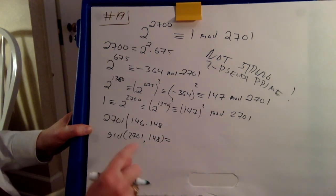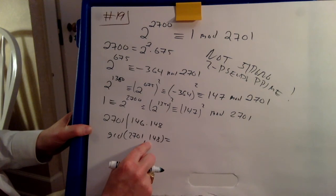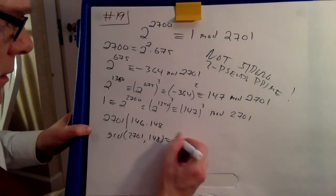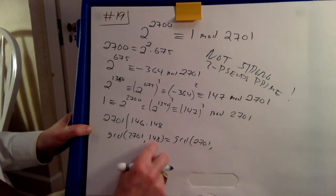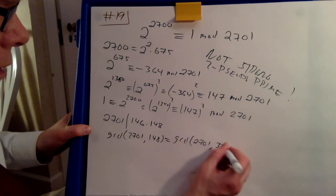When you look at it, here you see there's no factor of two. This number is divided by four. So we can take out the fours here. So this is the gcd of 2071 and 148 divided by four. That's 37.